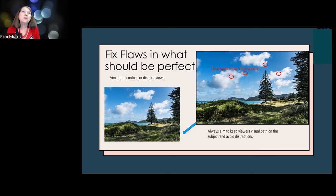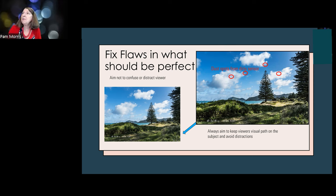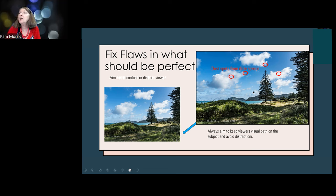Common flaws within images are sensor spots - these come from dust on your sensor, and they show up particularly when you're using a wide aperture and shooting the sky. They appear as little dirty spots in your image. If you've got dirty spots in your sky, they're coming from your sensor and your sensor needs cleaning. The first time I ever got one, I thought I'd photographed a flying saucer - it was only when it was in every single image that I realized something was wrong.